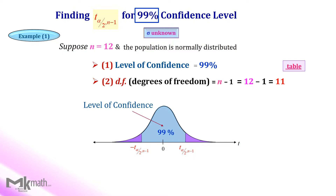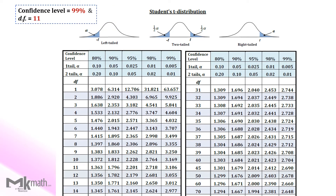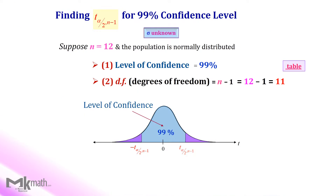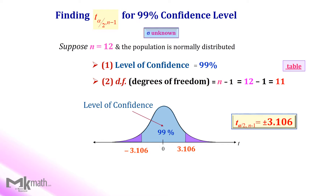Then look up the table. First, locate 11 degrees of freedom. Then select the 99% confidence level from the top row. Then read the intersection of those to get the t-score as 3.106. We found the positive critical value 3.106. We should also have the negative critical value minus 3.106. So the critical values are plus or minus 3.106 for the 99% confidence level with a sample size of 12.